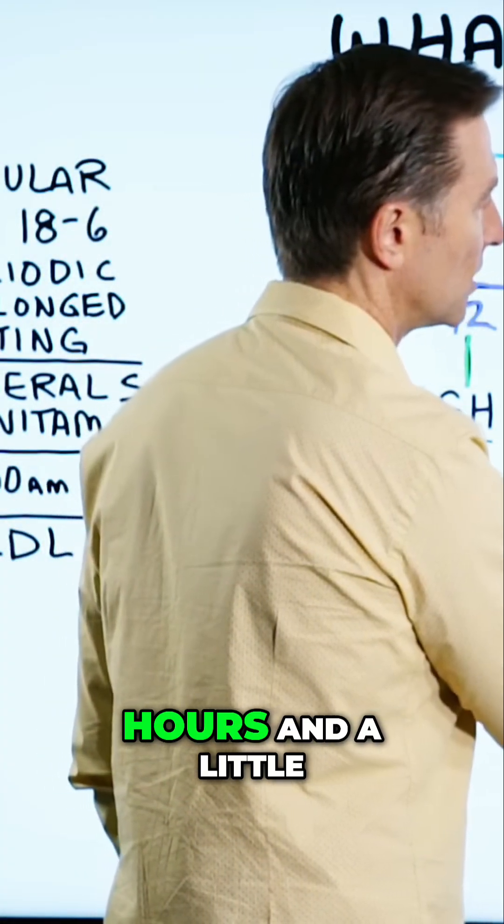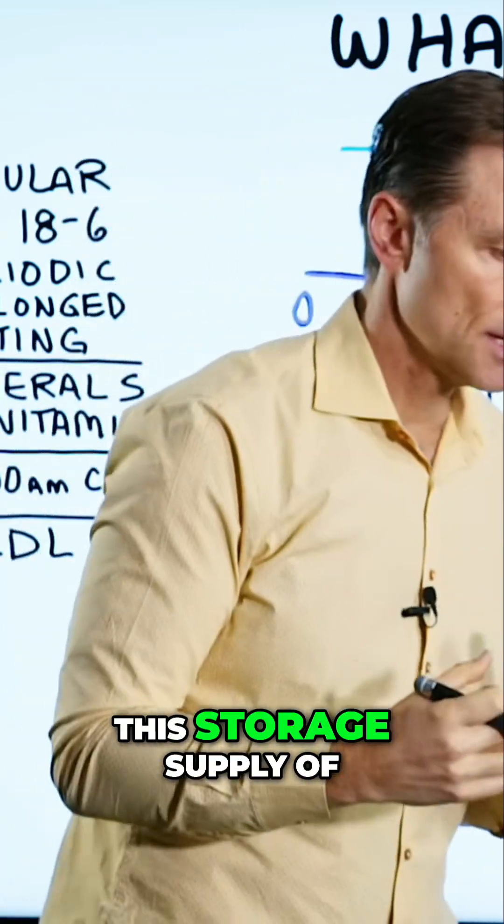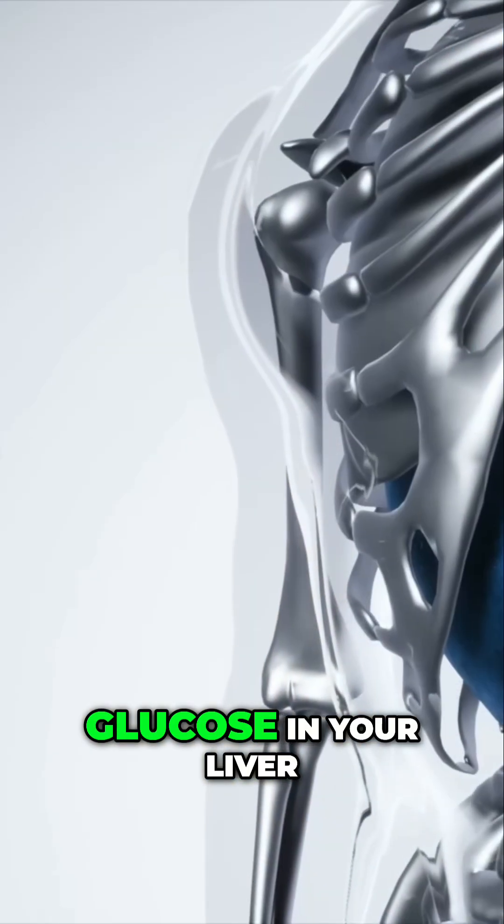And in about 24 hours and a little longer, you start to really deplete this glycogen reserve, this storage supply of glucose in your liver.